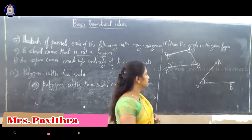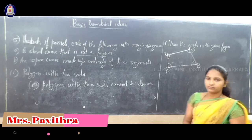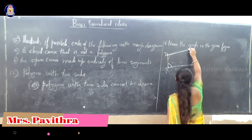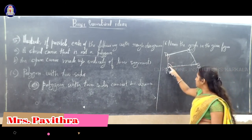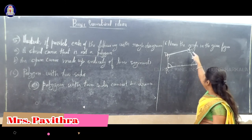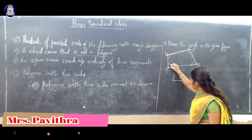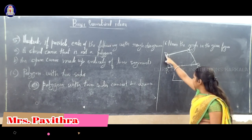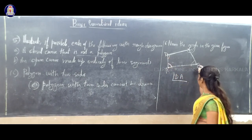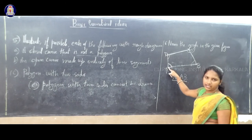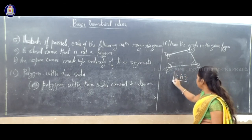We have to write the angles in this figure — name the angles in the given figure. There are four angles. For writing angle A, you should write D, A, B — so A becomes the middle letter. Angle DAB means angle A.